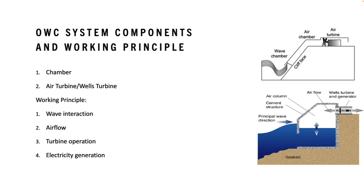Inside the chamber, there is an air turbine, also called a Wells turbine, which is a special type of turbine designed to operate with variable air flows. The turbine is connected to a generator that converts the mechanical energy of the rotating turbine into electrical energy.